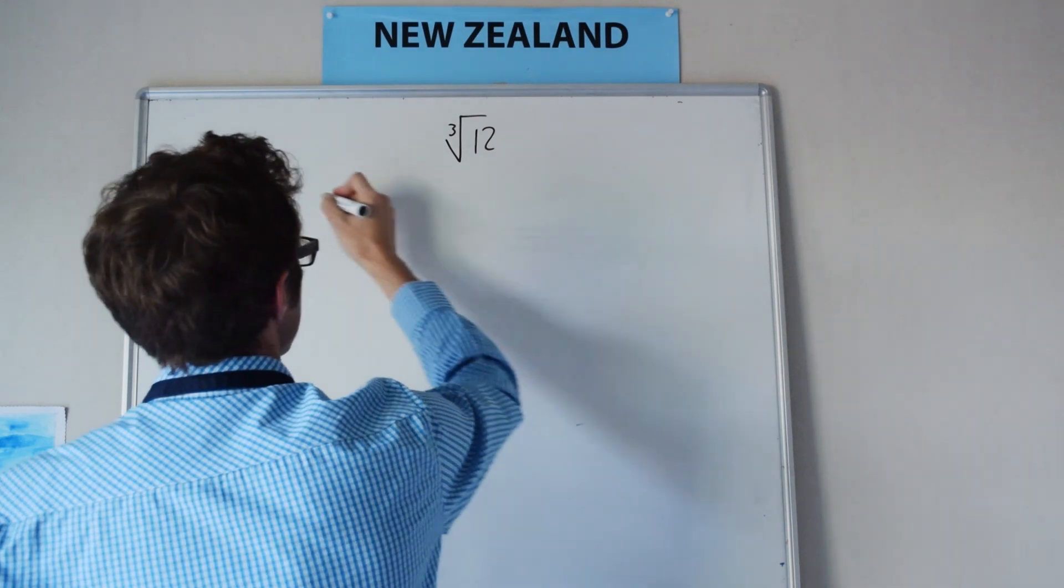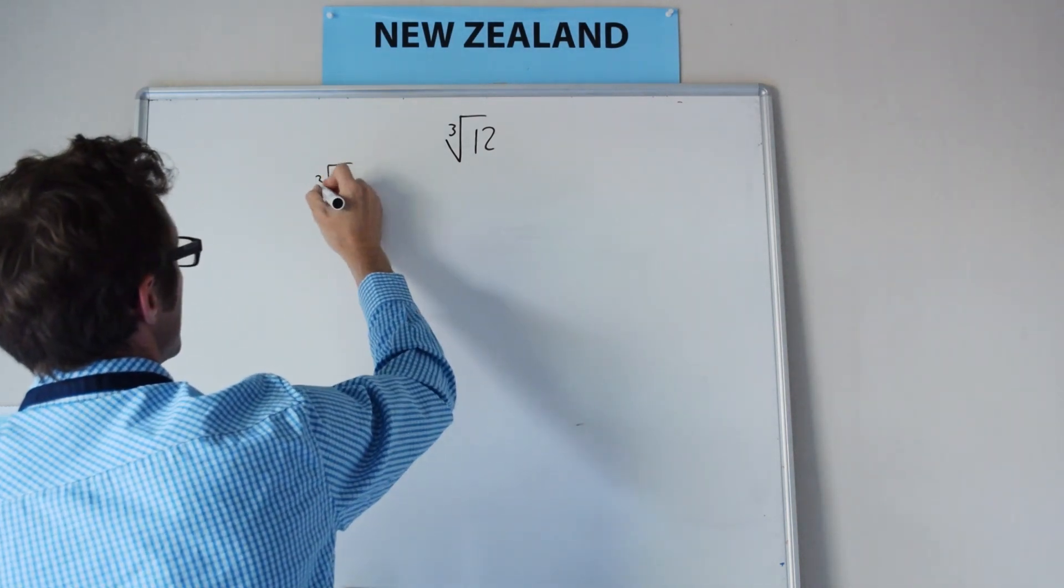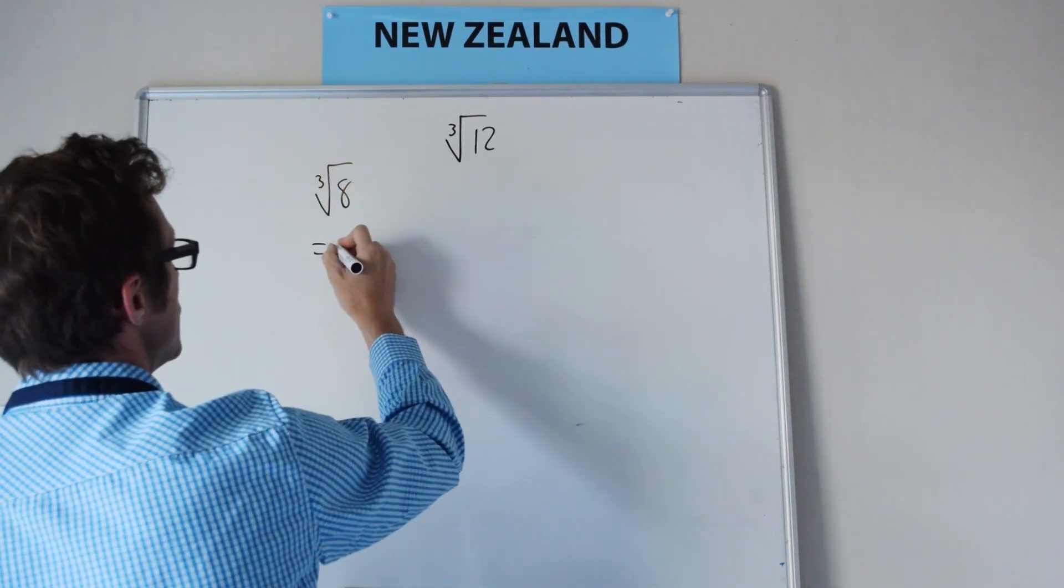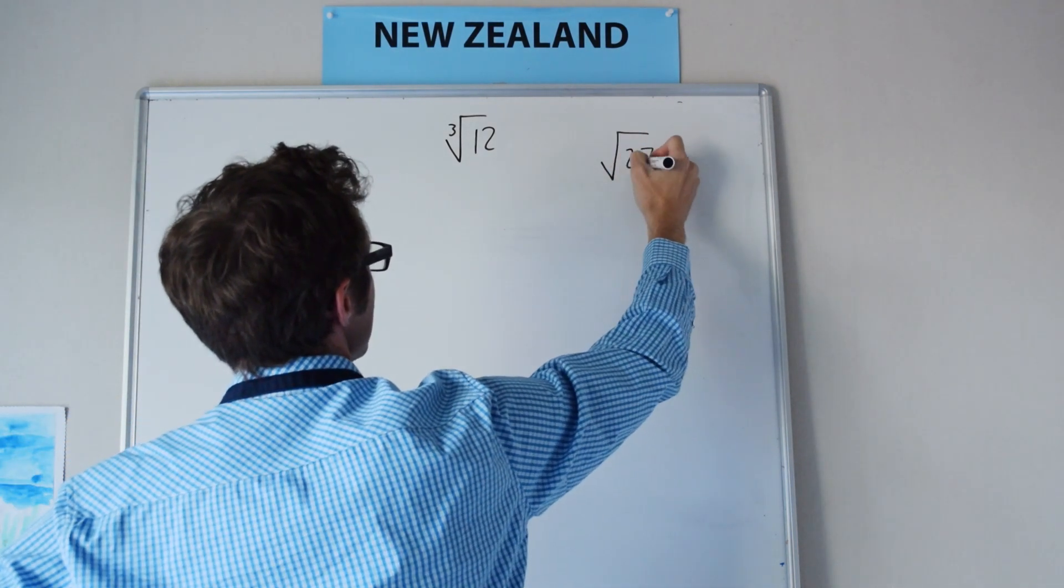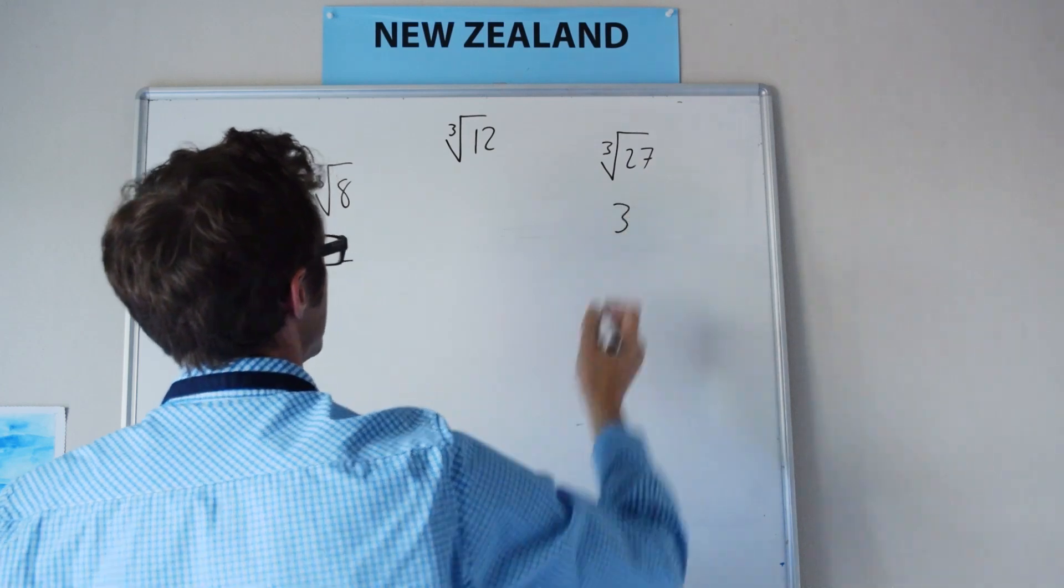Well, we know on one side of this, perhaps the lower side, we've got cube root 8 is equal to 2, and then the cube root 27 is equal to 3.